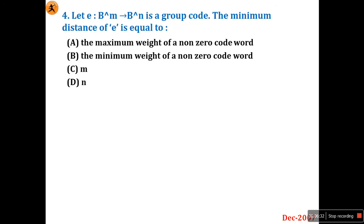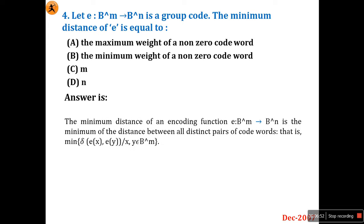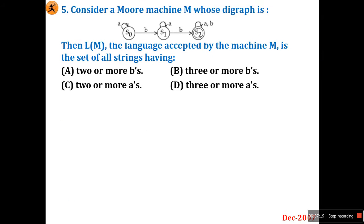Question number four: let e be a function from B^m to B^n and a group code. The minimum distance of e is equal to — the maximum weight of a non-zero codeword, the minimum weight of the non-zero codeword, m, or n? This is a standard theorem: the minimum distance of the encoding function e from B^m to B^n is the minimum of the distance between all distinct pairs of codewords, that is minimum of δ(e(x), e(y)). So option B is the right answer.